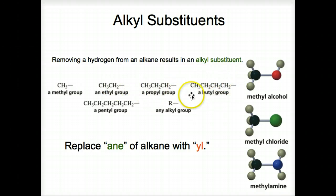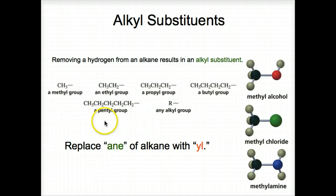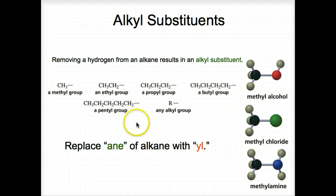Propyl group, butyl group — by convention we write it showing the hydrogens attached to the carbon, and the line indicates a bond from that carbon, the nearest carbon, to another carbon most likely. Two carbons, so it becomes ethyl; propane becomes propyl; butyl; pentyl. And often we'll just say an R group — R can be any alkyl group: methyl, ethyl, propyl, butyl, pentyl, and so forth. It could be any number of carbons.